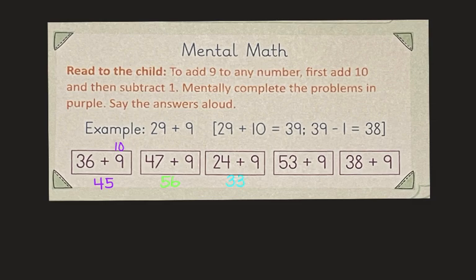For fifty-three plus nine, fifty-three plus ten would be sixty-three and then sixty-three minus one is sixty-two.